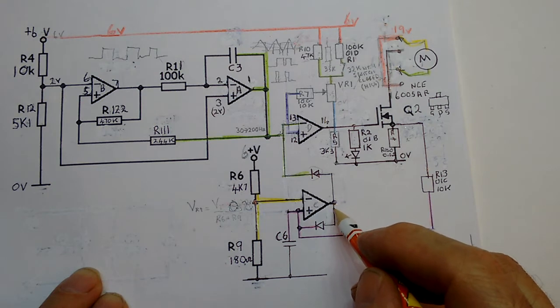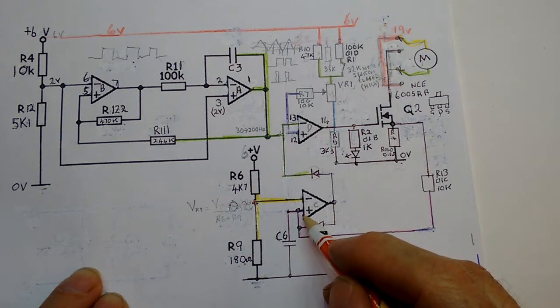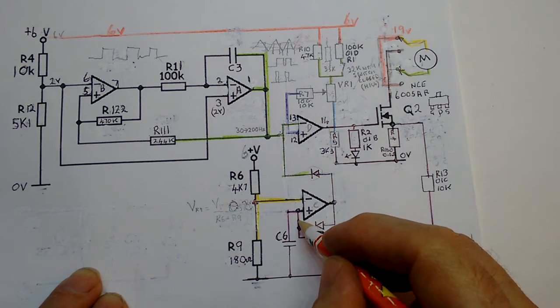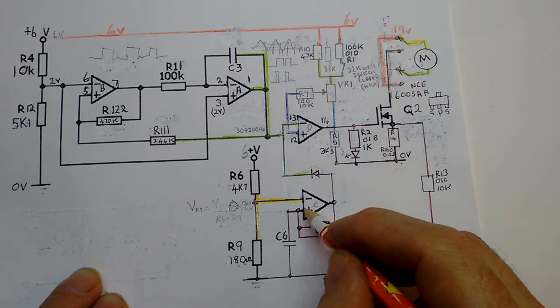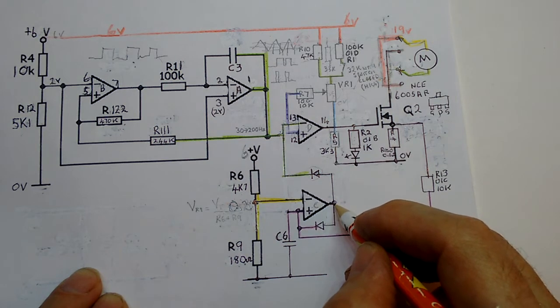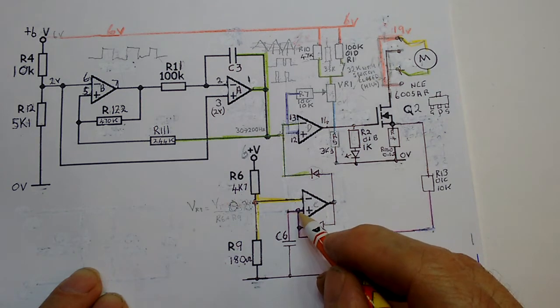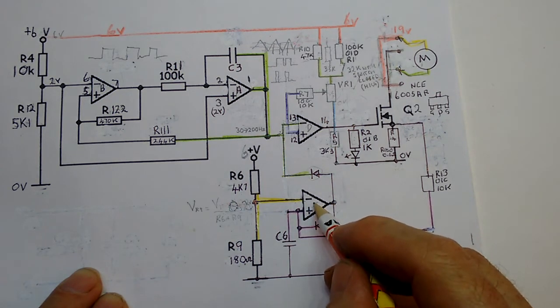Not only does it switch that op amp off, but it's got a diode feeding back into it. So as soon as this goes high, this diode feeds back into here, keeping this high. And therefore this stays high, and this will stay high until we disconnect the power. So we have to turn the power off to reset this.